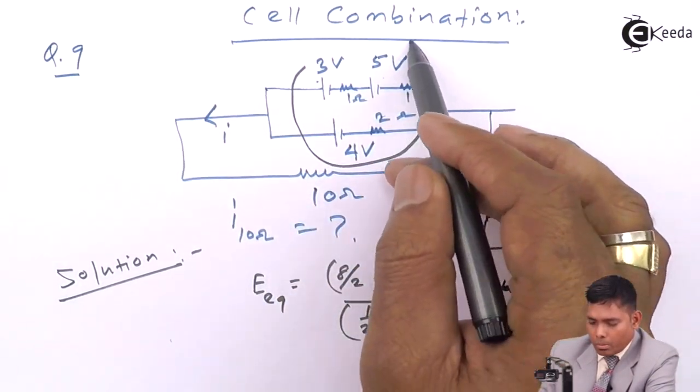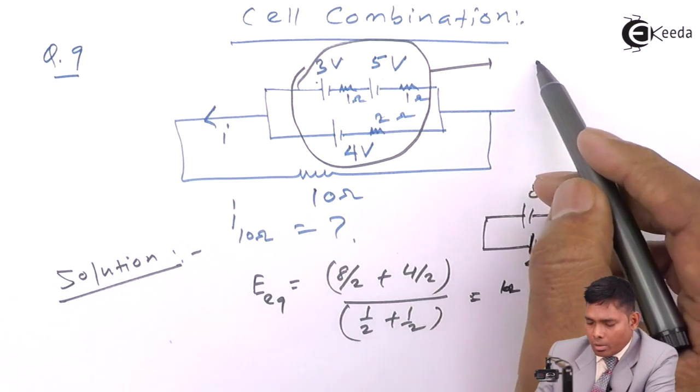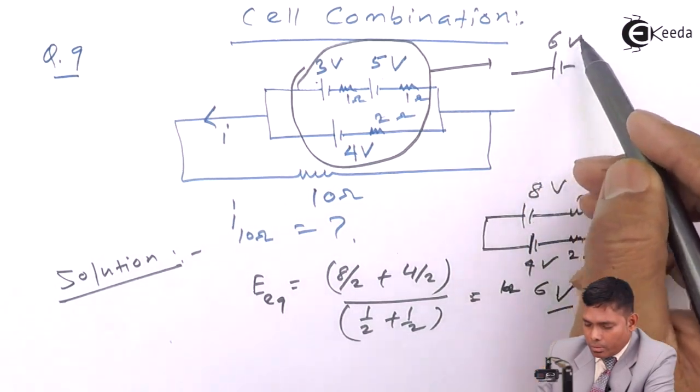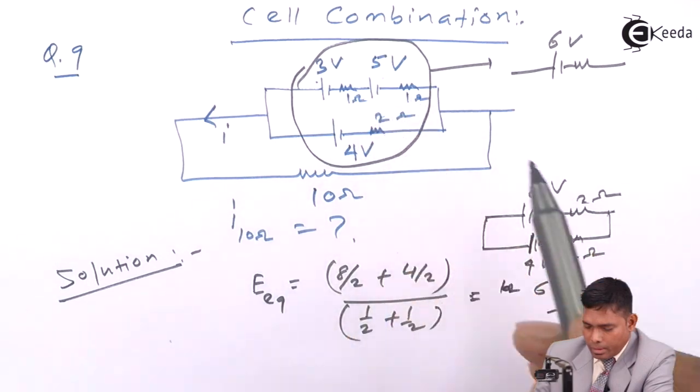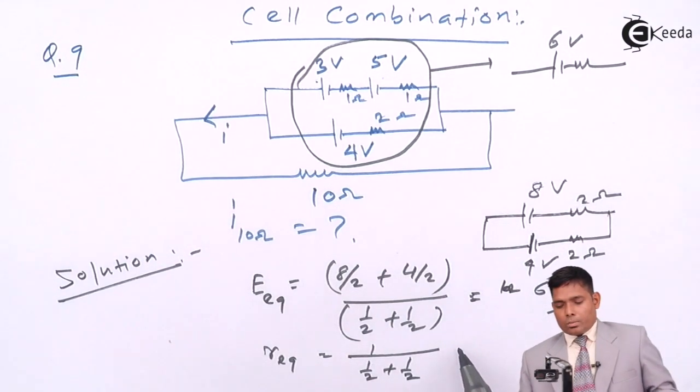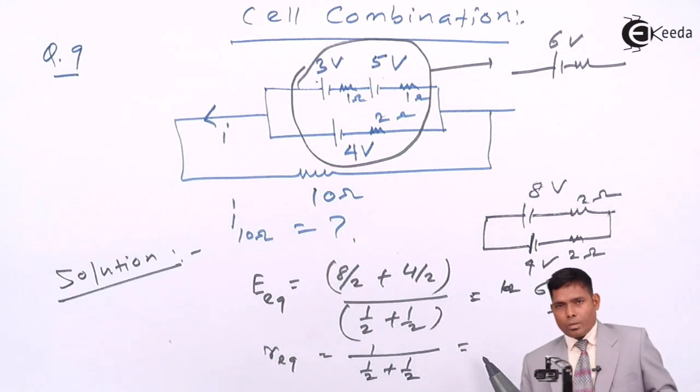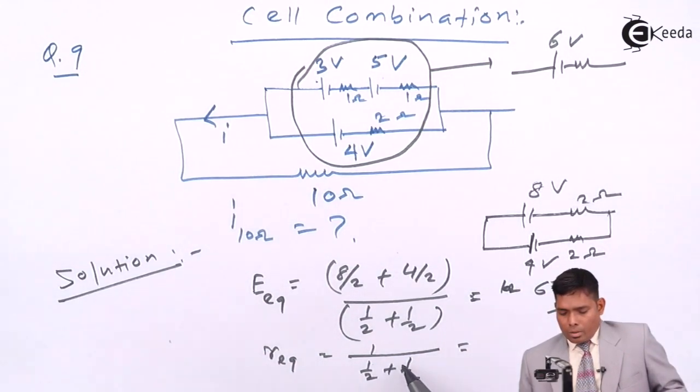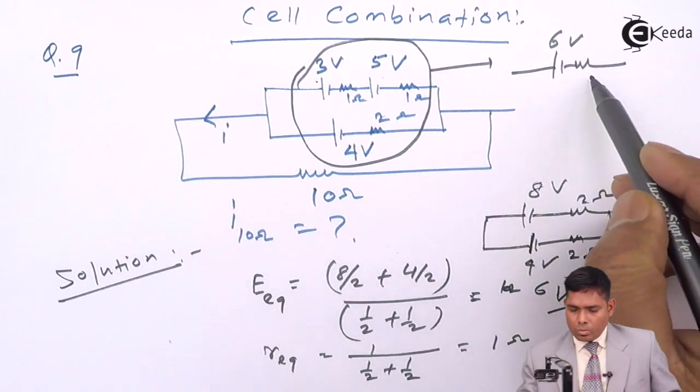This equivalent, the whole bunch acts like a battery of 6 volt and the internal resistance I have to calculate by R equivalent method, that is 1 upon, 1 upon 2 plus 1 upon 2. So that comes out to be, this comes out to be 1, so it is 1 ohm.